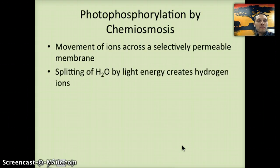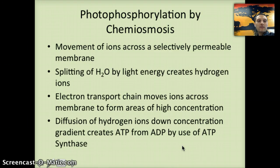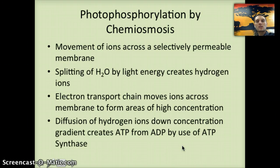Let's look at the term photophosphorylation by chemiosmosis. This is the movement of ions across a selectively permeable membrane. The splitting of H2O by light creates hydrogen ions, and the electron transport chain moves those ions across the membrane from areas of high concentration. Those hydrogen ions then diffuse down the concentration gradient from high to low, and as they do, they move through ATP synthase, which creates ATP from ADP using that enzyme — essentially the same process as what we saw in cellular respiration.